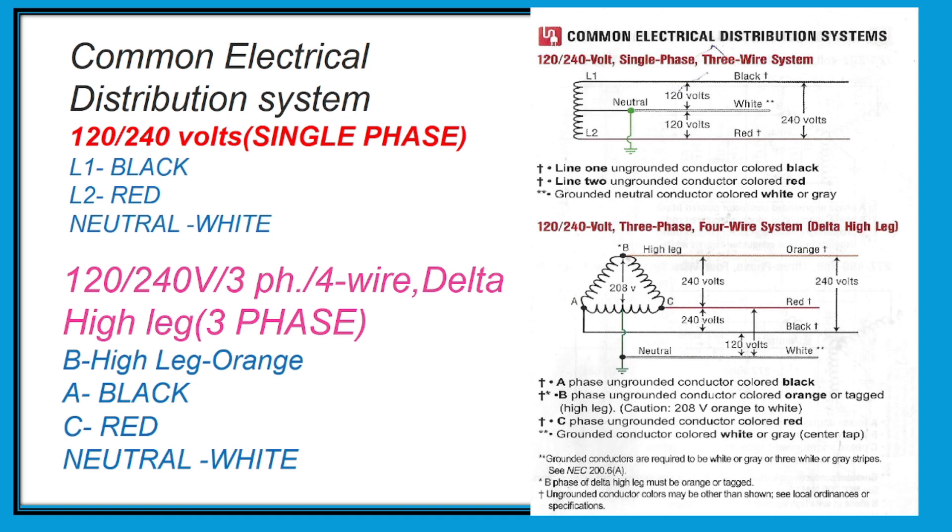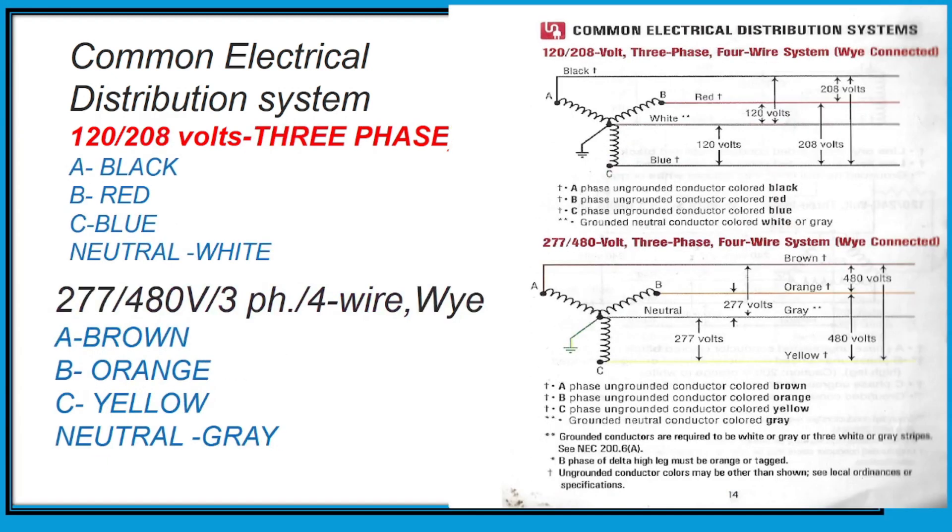We have also 120/240 volts three-phase four-wire system delta high leg. The next one is 120/208 volts three-phase four-wire system wye connected. Line 1 or A is black, line 2 is red, line 3 is blue, and neutral is white.